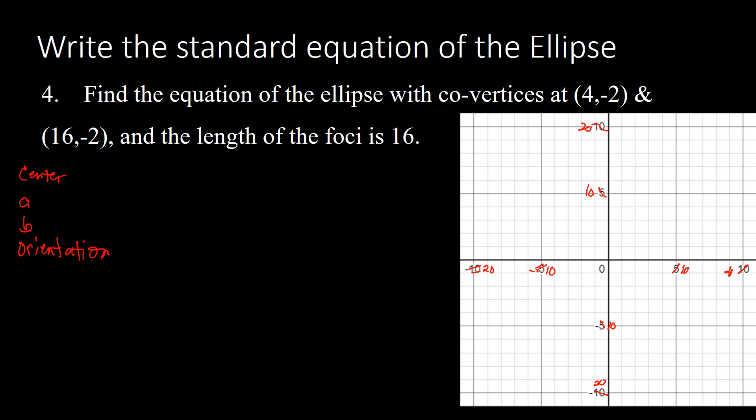Plotting the co-vertices: (4, -2) is two units right and two down, and (16, -2) is at x = 16, y = -2. Since the co-vertices are horizontally oriented, the vertices — and therefore the major axis — are vertical. So the orientation of this ellipse is vertical.